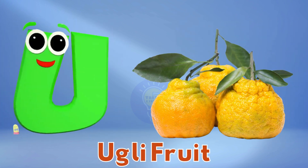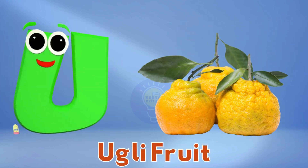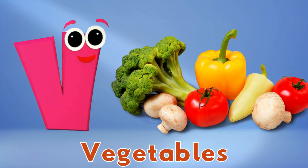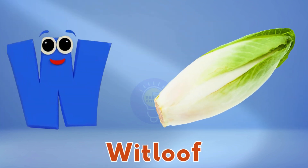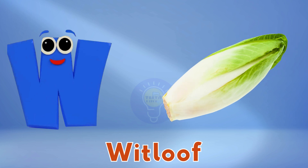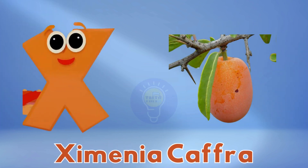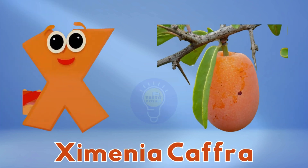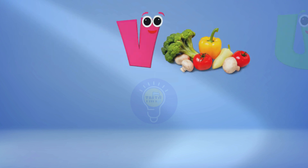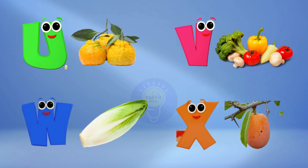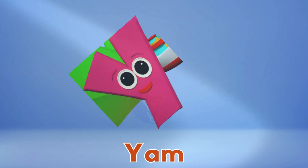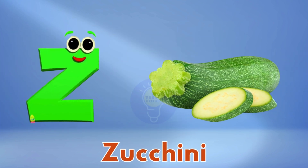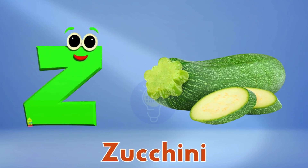U is for ugly fruit, ugly fruit. V is for vegetables, vegetables. W is for whitloaf, whitloaf. X is for zymenia caff, zymenia caff. Y is for yam, yam. Z is for zucchini, zucchini.